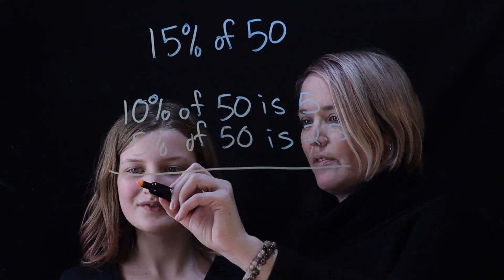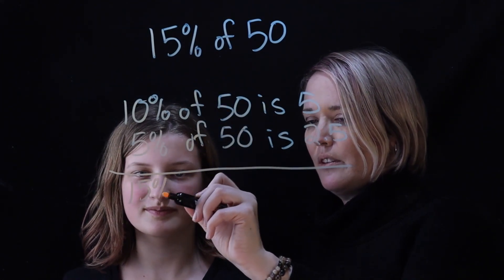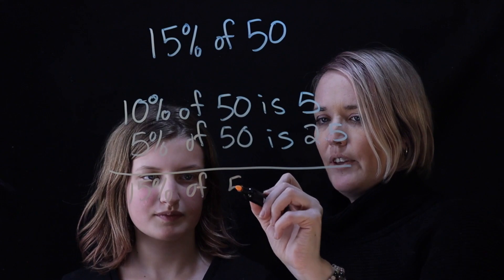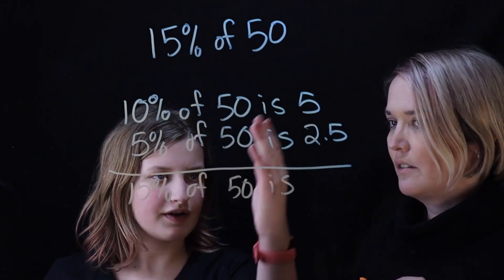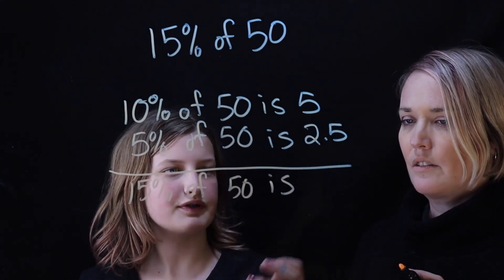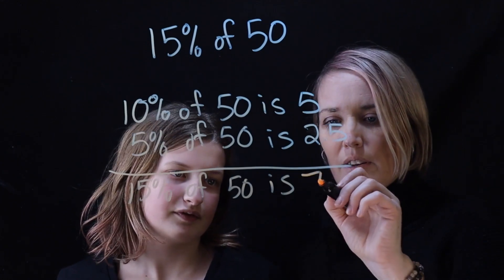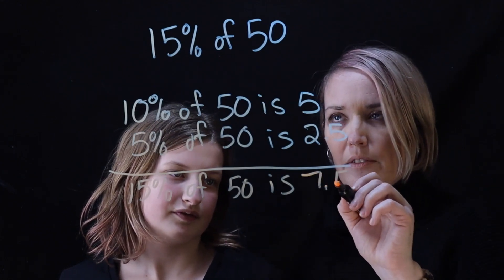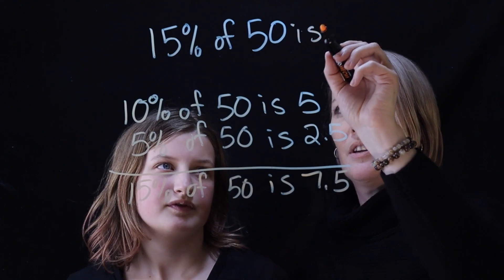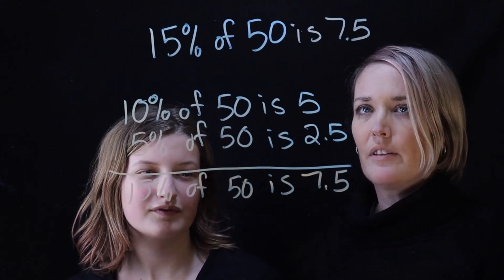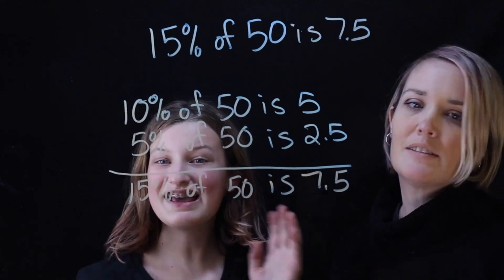So let's add these together. 10% plus 5% would give us 15%, and for 50 — 5 plus 2.5 is 7.5. So 15% of 50 is 7.5. That's great, Anna. Thanks, bye everyone!